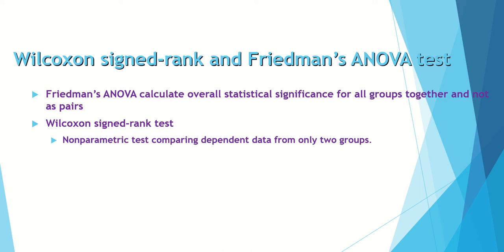Usually Friedman's ANOVA test data are complemented and supplemented by another test called the Wilcoxon signed rank test. I have made a video clip to show you how to do the Wilcoxon signed rank test in SPSS — it's on my channel. Briefly, it is a non-parametric test that compares dependent data from only two groups. So both Wilcoxon and Friedman are for related samples; the difference is Friedman calculates the p-value for three or more samples, while Wilcoxon works on pairs.